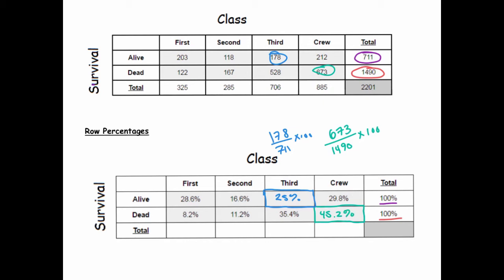So turning these into row percentages, we can say things like: 16.6% of those who survived were second class passengers, and 35.4% of those who died were third class passengers. The key is to focus on the language — who am I considering the total? That's different from the overall percentage table we made previously. Here, the ends of the rows represent 100%.